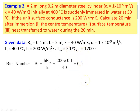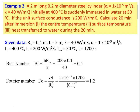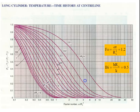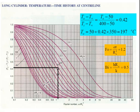Calculate Biot number: Bi = H·R₀/K = 200 × 0.1 / 40 = 0.5. Fourier number: Fo = α·t/R₀² = 1 × 10⁻⁵ × 1200 / (0.1)² = 1.2. From the Heisler chart with Fo = 1.2 and Bi = 0.5, the temperature ratio (T₀ − T∞)/(Tᵢ − T∞) = 0.42. Therefore: T₀ − 50 = 0.42 × (400 − 50) = 0.42 × 350, giving T₀ = 50 + 147 = 197°C. The center temperature after 20 minutes is 197°C.